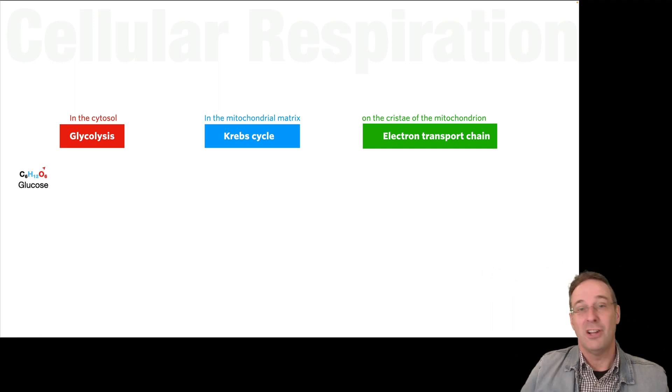The main input to glycolysis is glucose, C6H12O6, and the output, that glucose is taken and broken into two pyruvate molecules. In fact, the name glycolysis means splitting sugar.